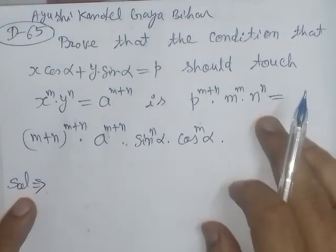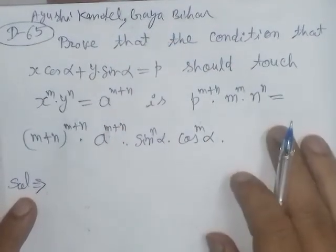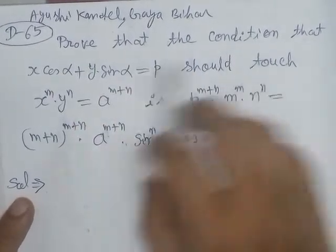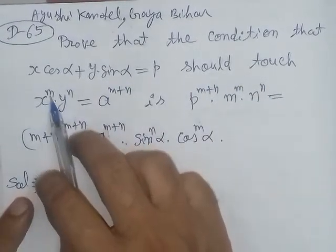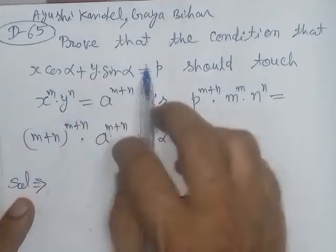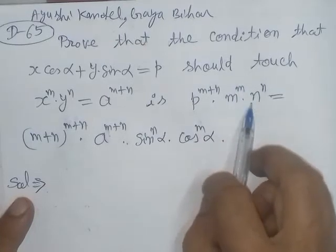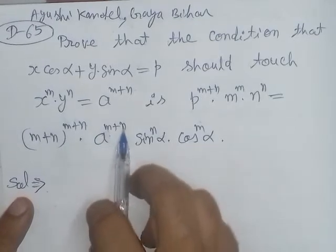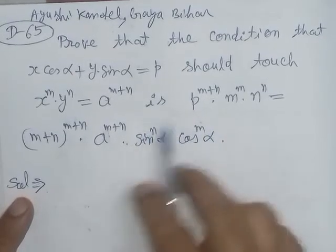Bismillahirrahmanirrahim. On the demand of Ayushi Kandel from Gaya, Bihar, a problem from differential calculus: tangent and normal chapter. Here, prove that the condition that x·cosα + y·sinα = p should touch the curve x^m · y^n = a^(m+n). This condition we have to prove.